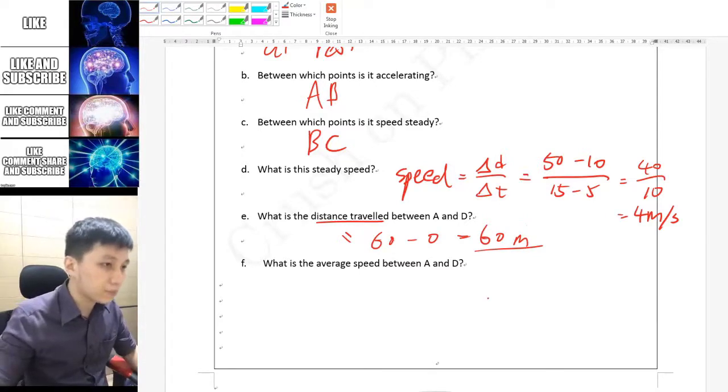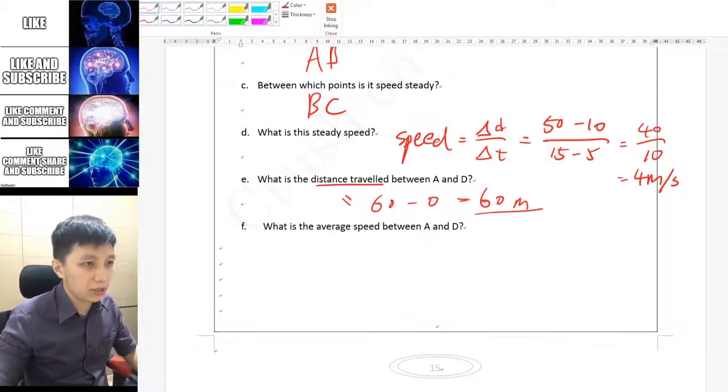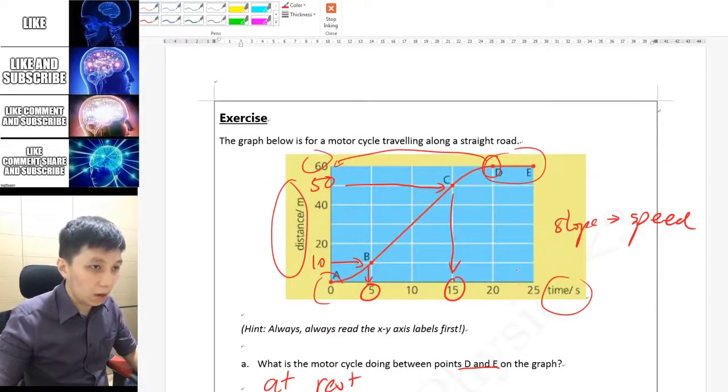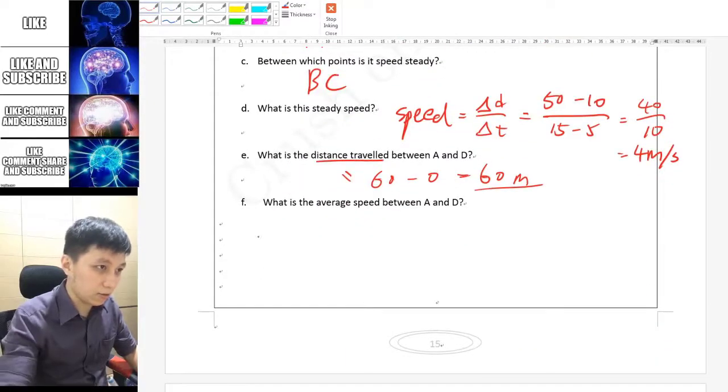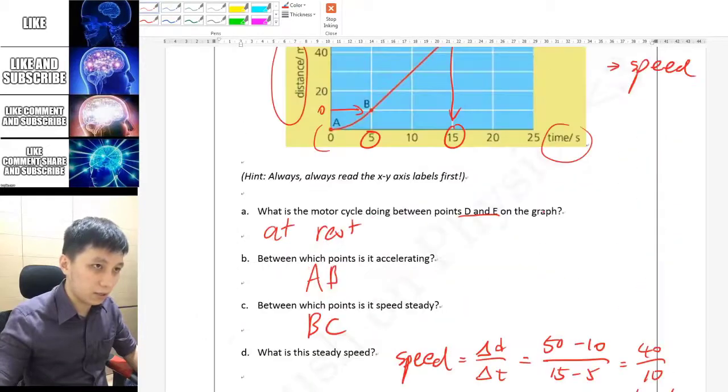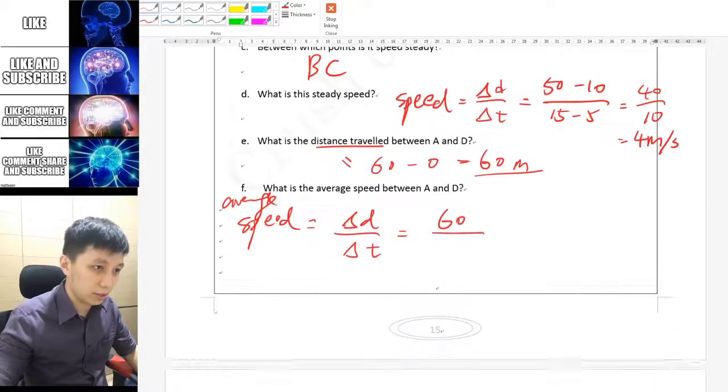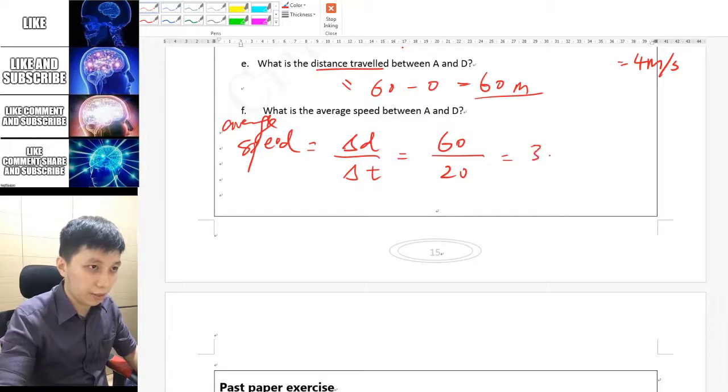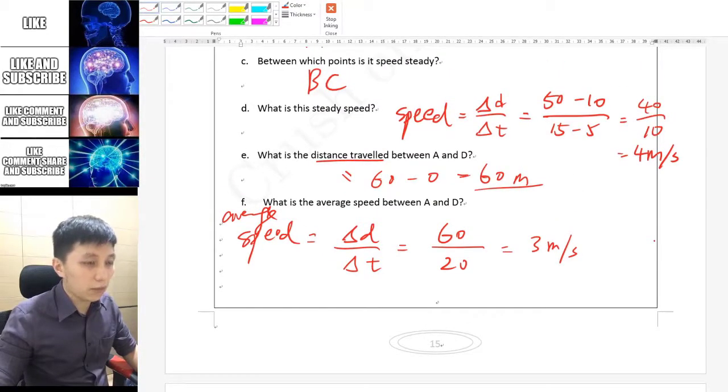What's the average speed between A and D? Up to D we have 20 seconds, so we can calculate average speed is again delta D over delta T: 60 meters over the time which is 20 seconds, so you get 3 meters per second.